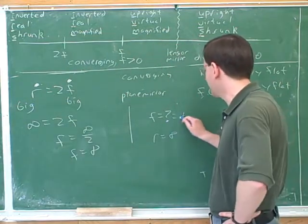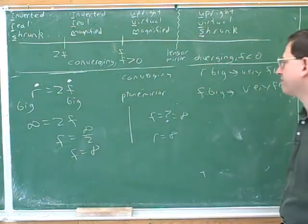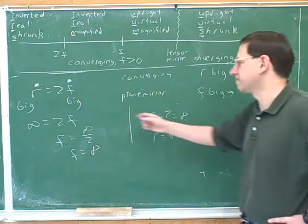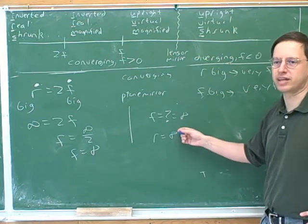So we're getting here that f is also infinite. We would have expected that from the beginning anyway, because we just saw that f is also a measure of flatness. Well, this is infinitely flat. So all the measures of flatness should be infinitely big.